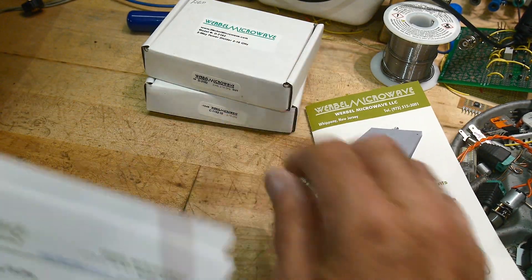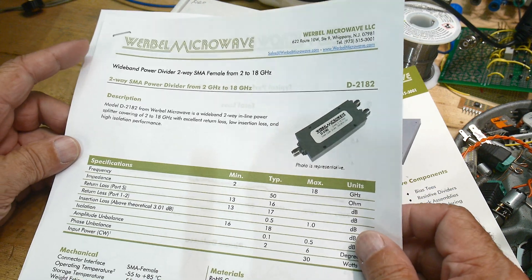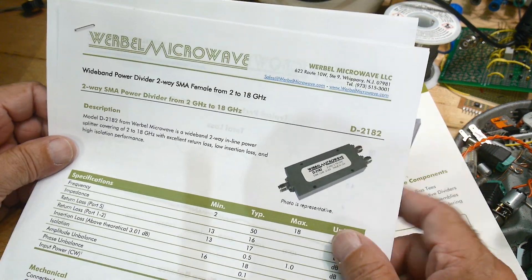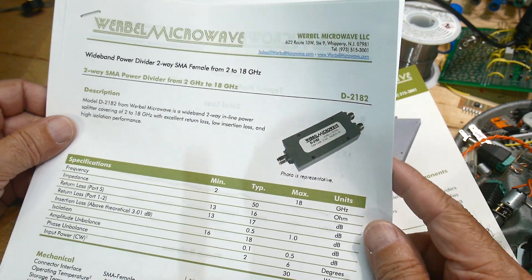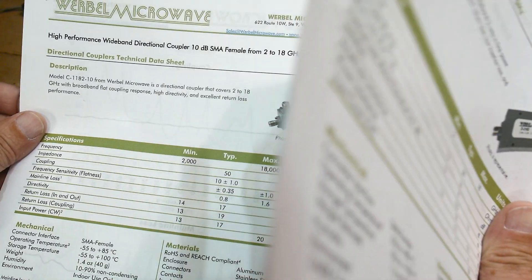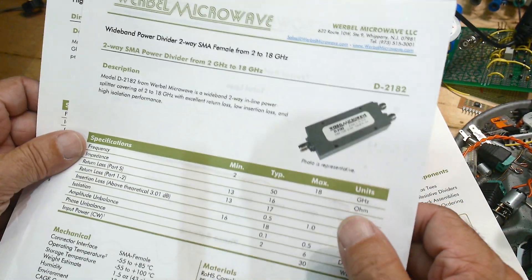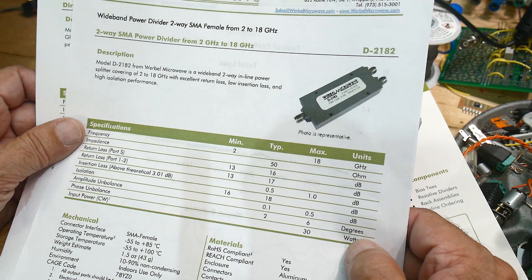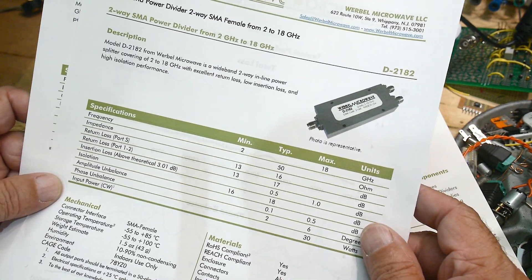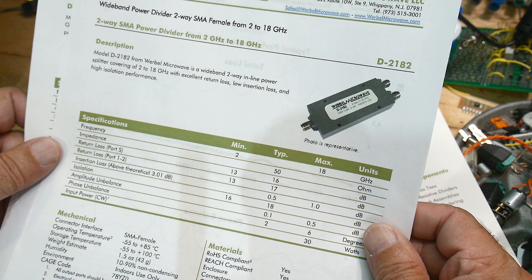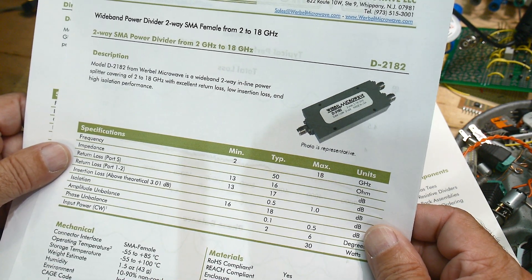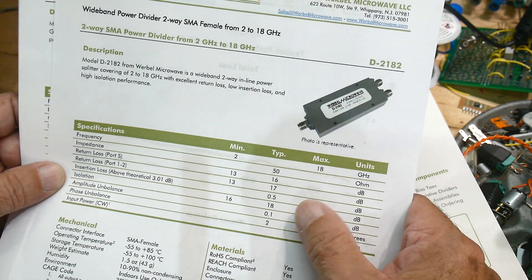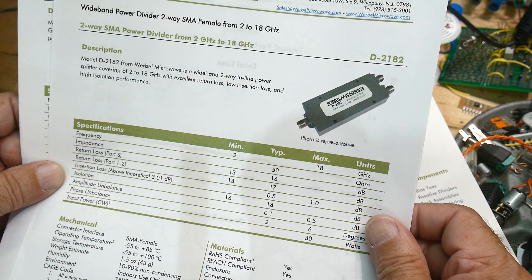Let's take a look at these devices that they sent. I printed out the data sheets. This is a simple two-way power divider, 2 to 18 gigahertz. Up to 30 watts for this guy. 50 ohms, isolation 18 dB of isolation. We could test that.